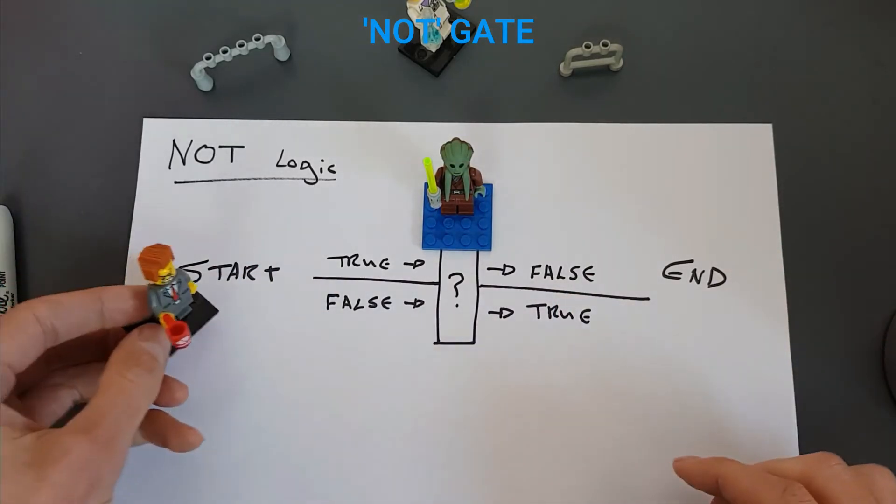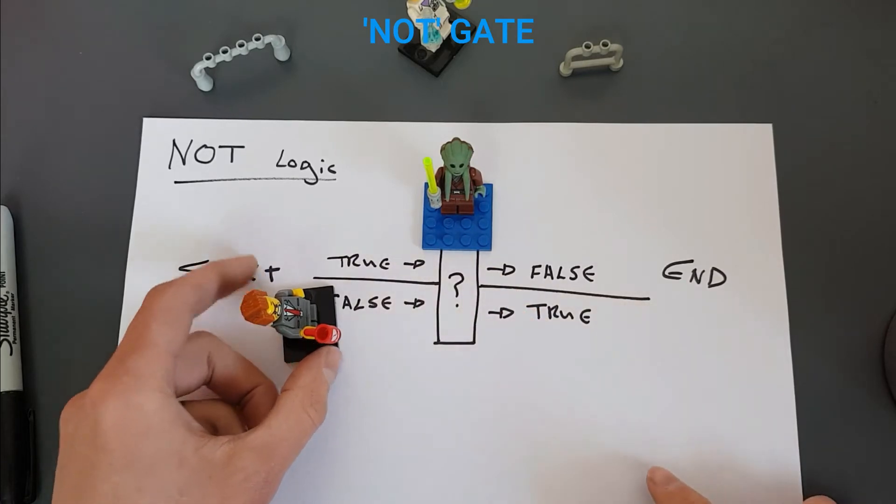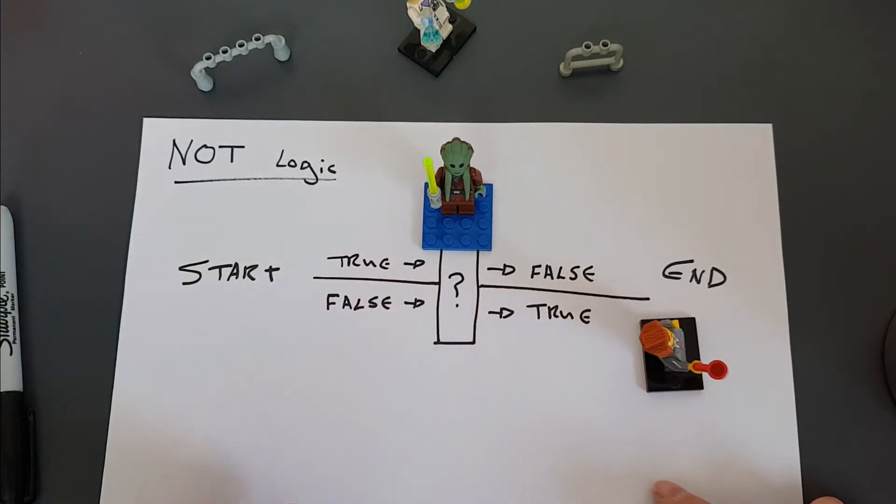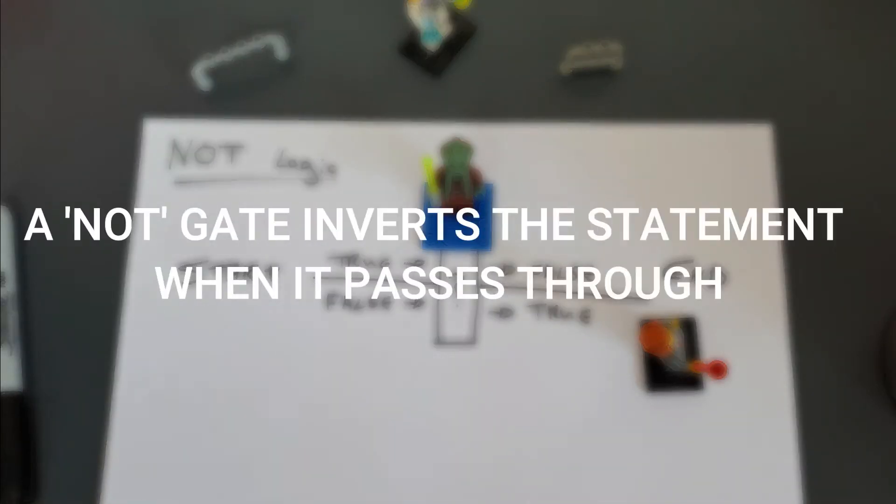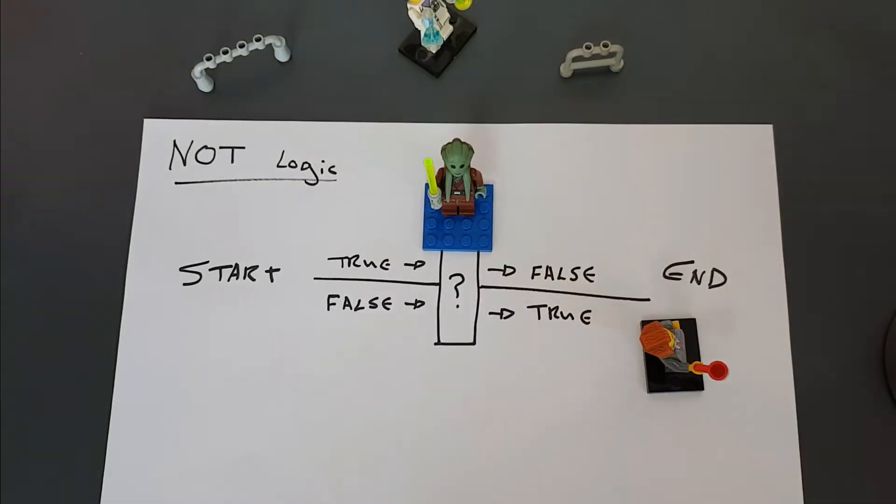If he came along and he was FALSE, the guy with the lightsaber changes his mind and he comes out on the other side going TRUE. So we use a NOT gate to invert whatever gets put in. So if the path was open and you add a NOT gate to it, then the path will be closed, and the other way around.